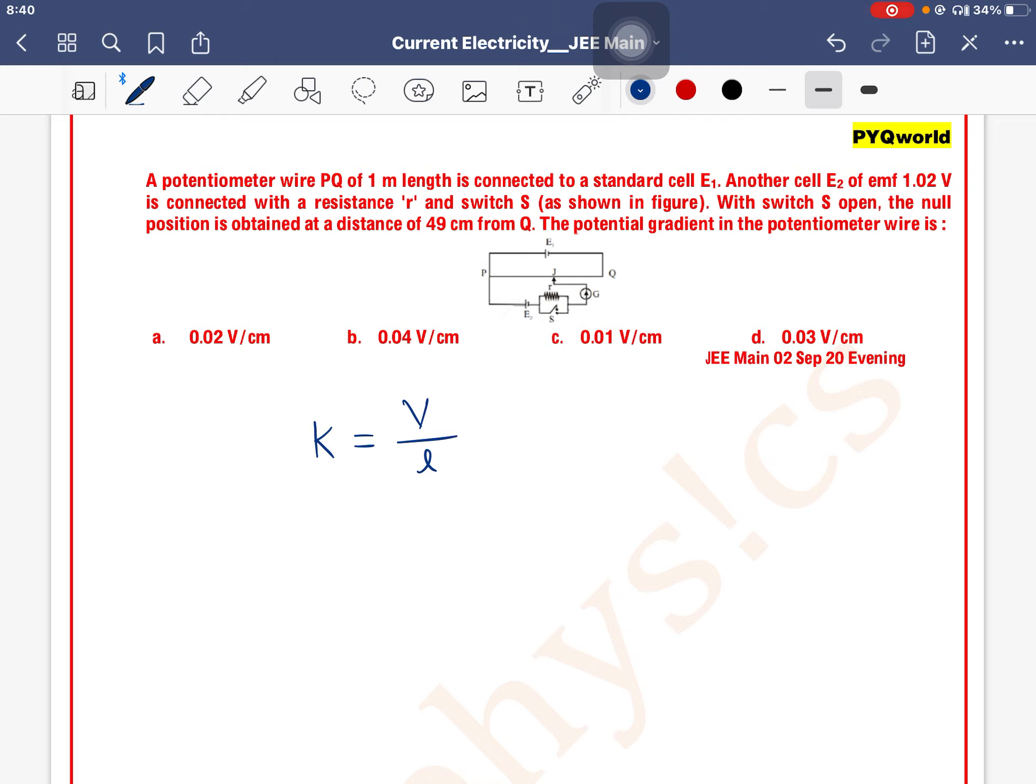E2 is 1.02 voltage, switch open, resistor is not working, and point J we have as the balancing point. What is PQ here? Balancing length we can write as voltage across PJ divided by length of PJ.